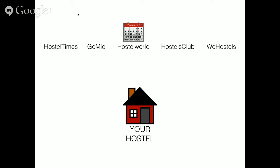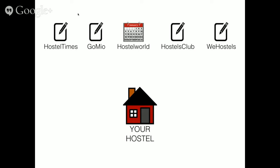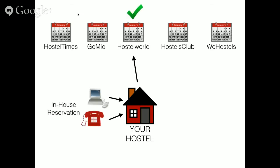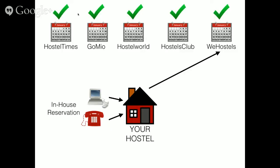So you wind up going and putting your hostel details on each of those. And then you also have to give each of those a calendar of availability or allocations and tell each of those sites how many beds can be booked on a particular day. But now when you get an in-house reservation, you have to communicate it to Hostel World and to all these other ones.